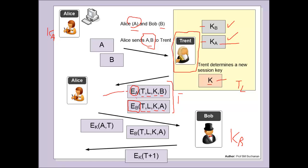When Alice receives the two elements, she's able to decrypt to find the timestamp, the lifetime, the new session key and Bob's identity. She then takes her identity, adds the timestamp that Trent has sent, and then will encrypt it with the new session key. She'll also send through the other part of the message that she received — the encrypted part that Bob can decrypt — with the timestamp, the lifetime, the key and Alice's identity. So she sends both of these elements over.